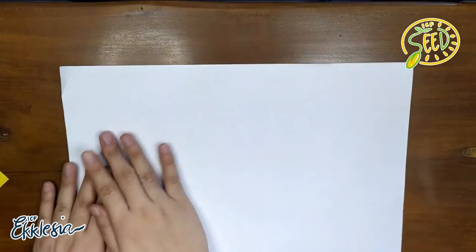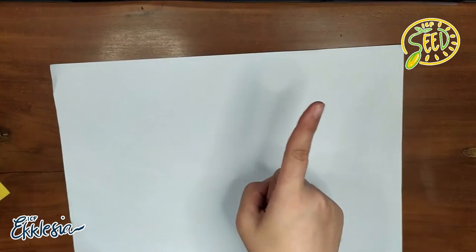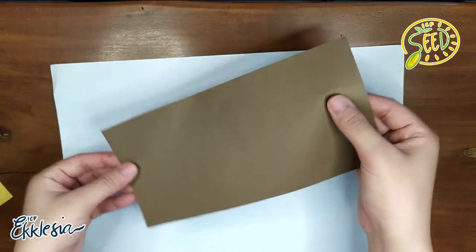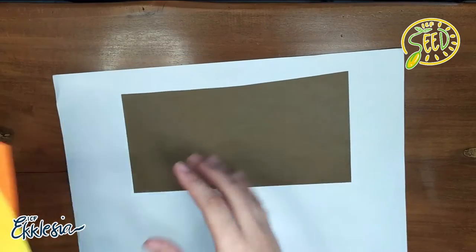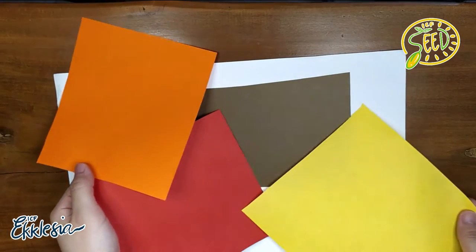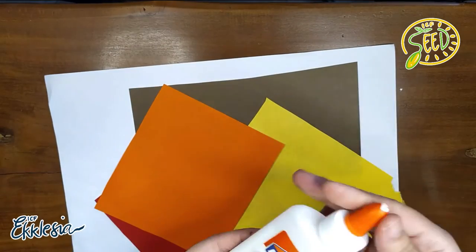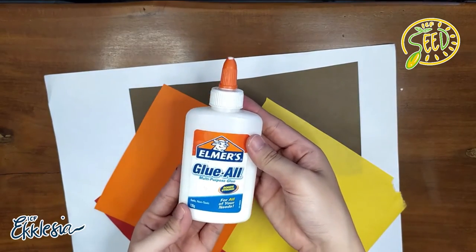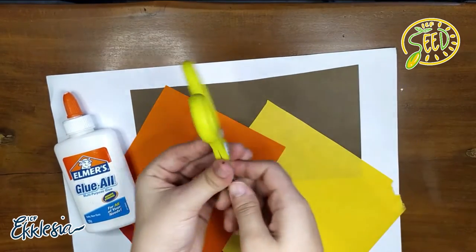The same materials pa rin ang gagamintin natin. Clean sheet of paper, brown colored paper, yellow, orange, red colored paper. Or pwede na rin yung magazine, yung tulad ng dati. Magazine, okay lang yun. Glue and scissors.